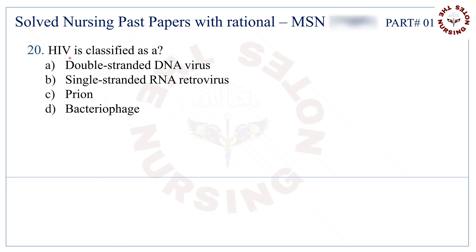Question number 20: HIV is classified as a. The correct answer is B — single-stranded RNA retrovirus.